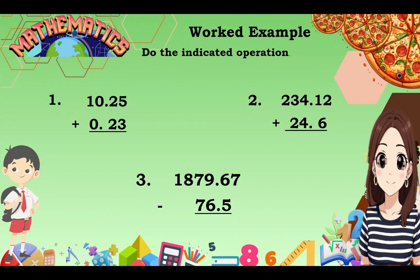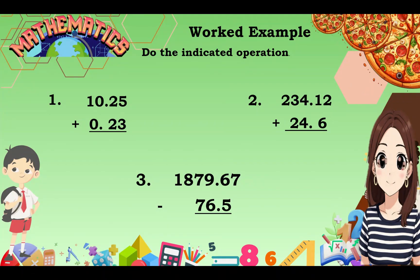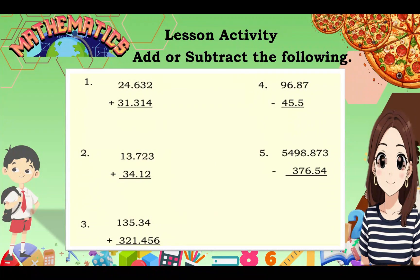Now for our work example, do the indicated operation. Number 1: 1.25 plus 0.23. Number 2: 234.12 plus 24.6. Number 3: 8.6 subtracted by 76.5. And now for our lesson activity, add or subtract the following.